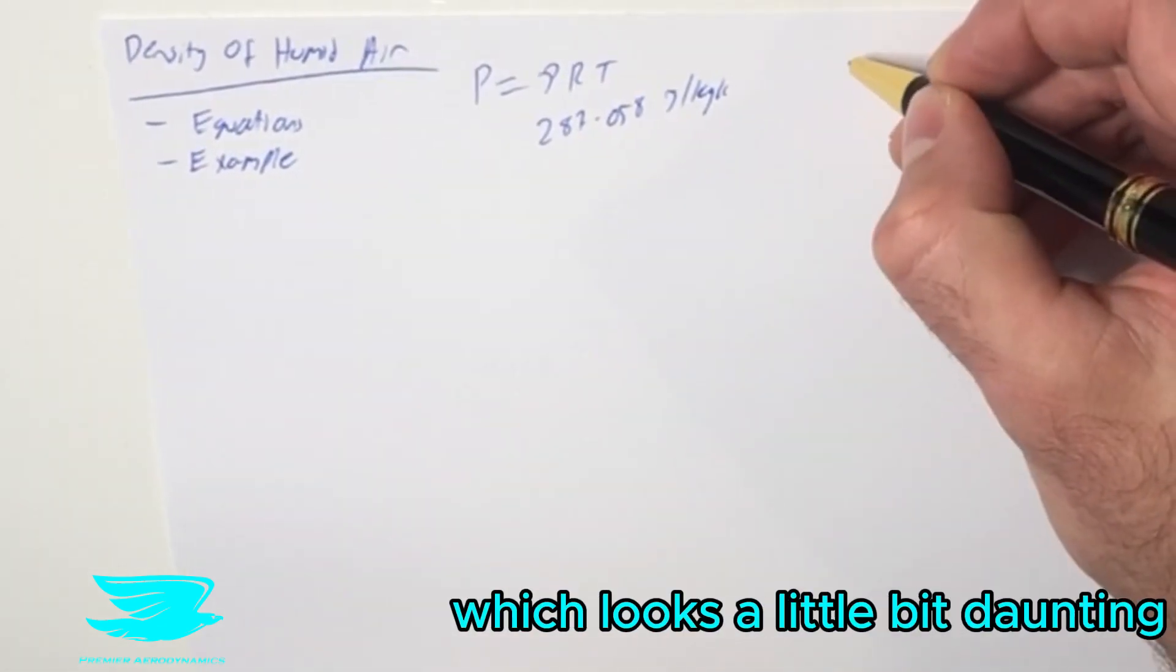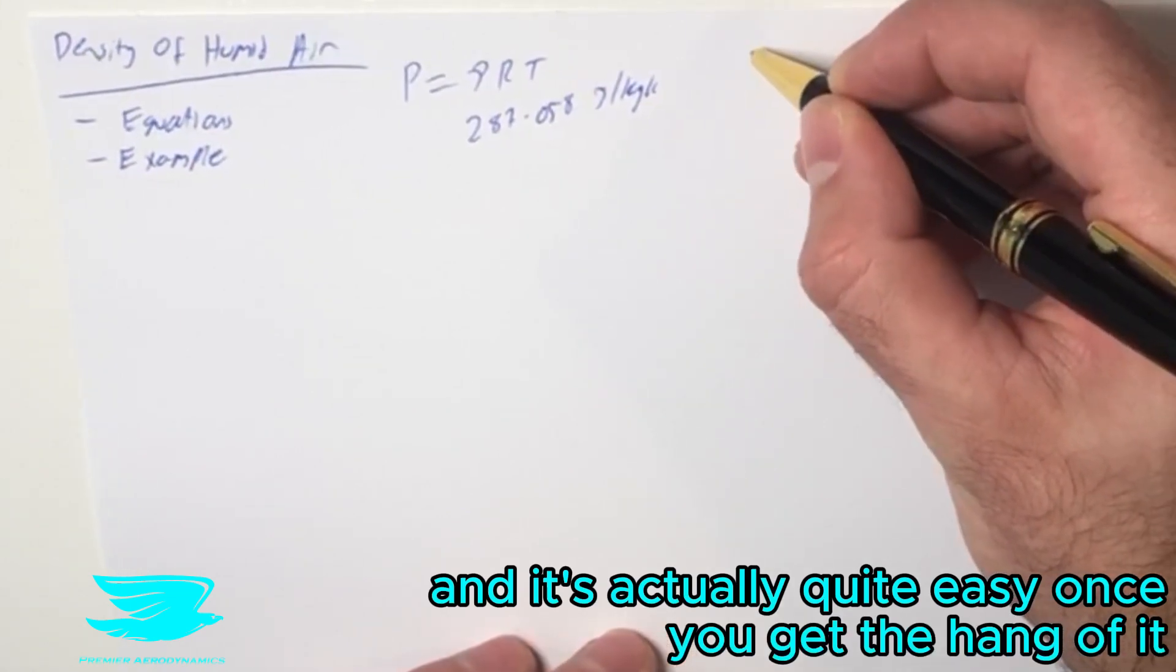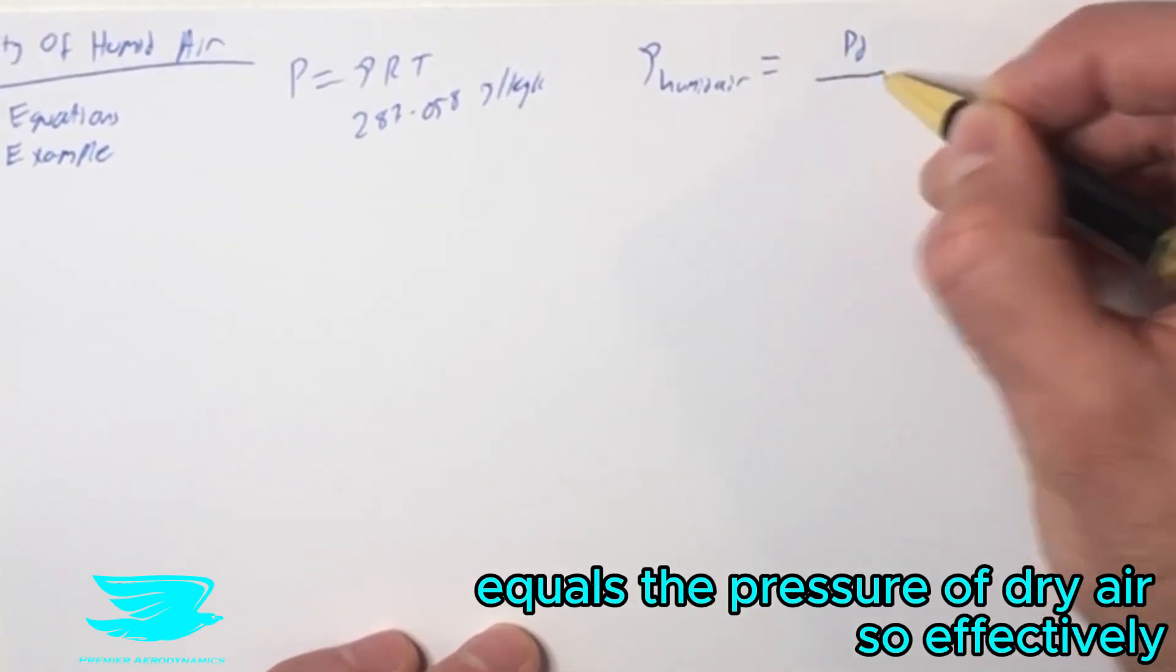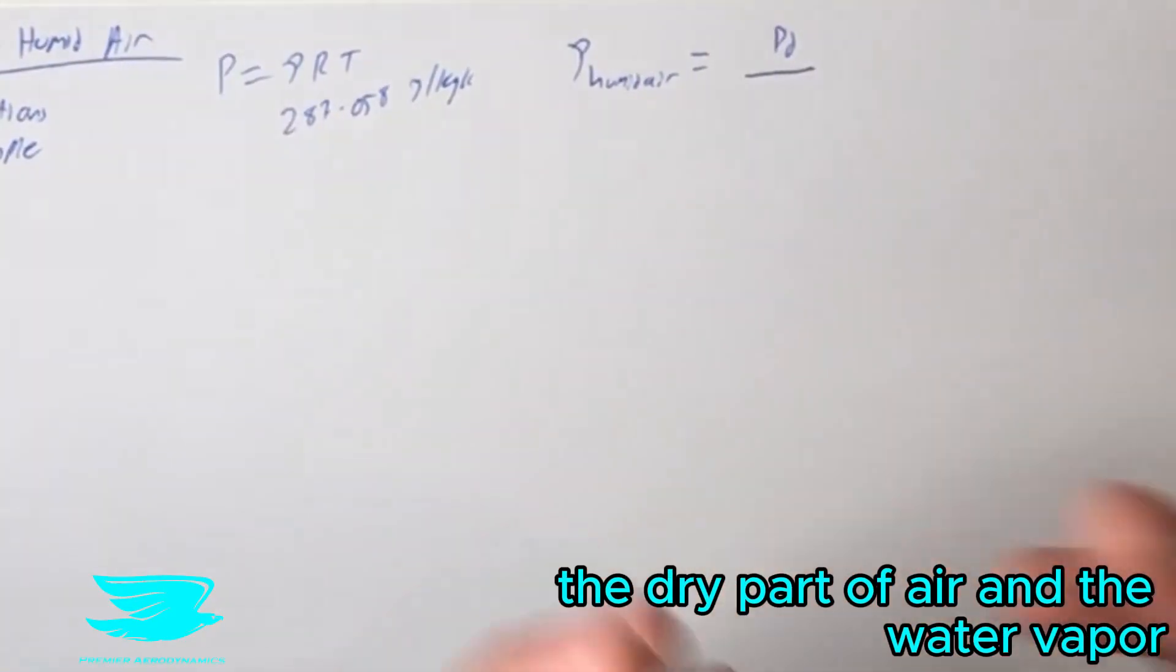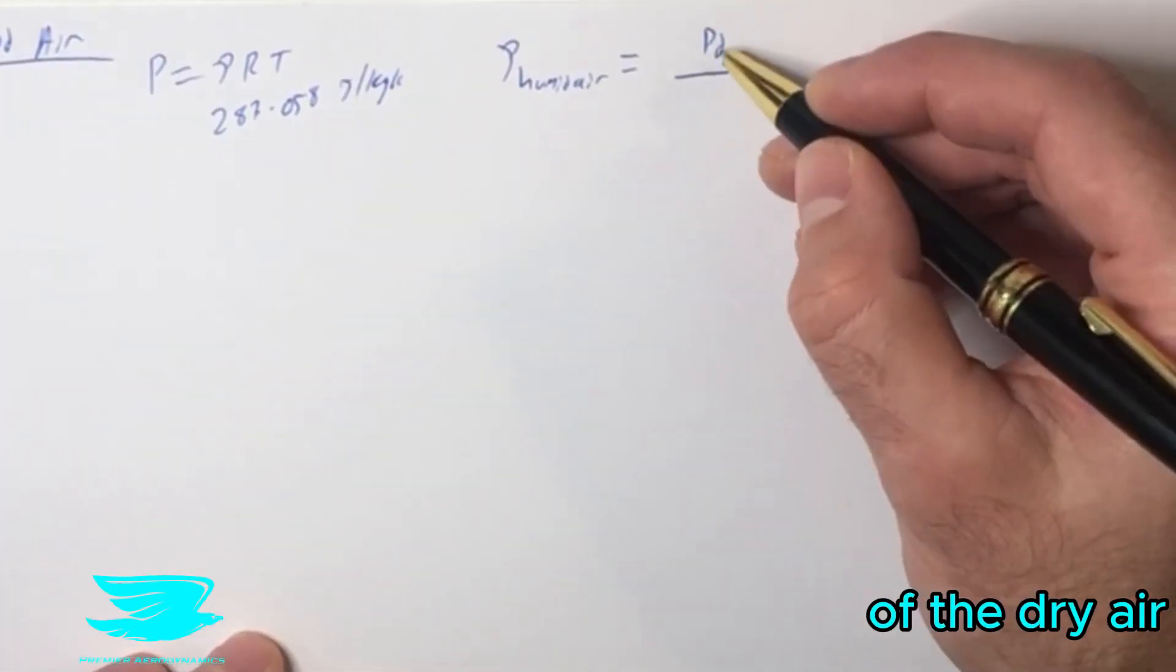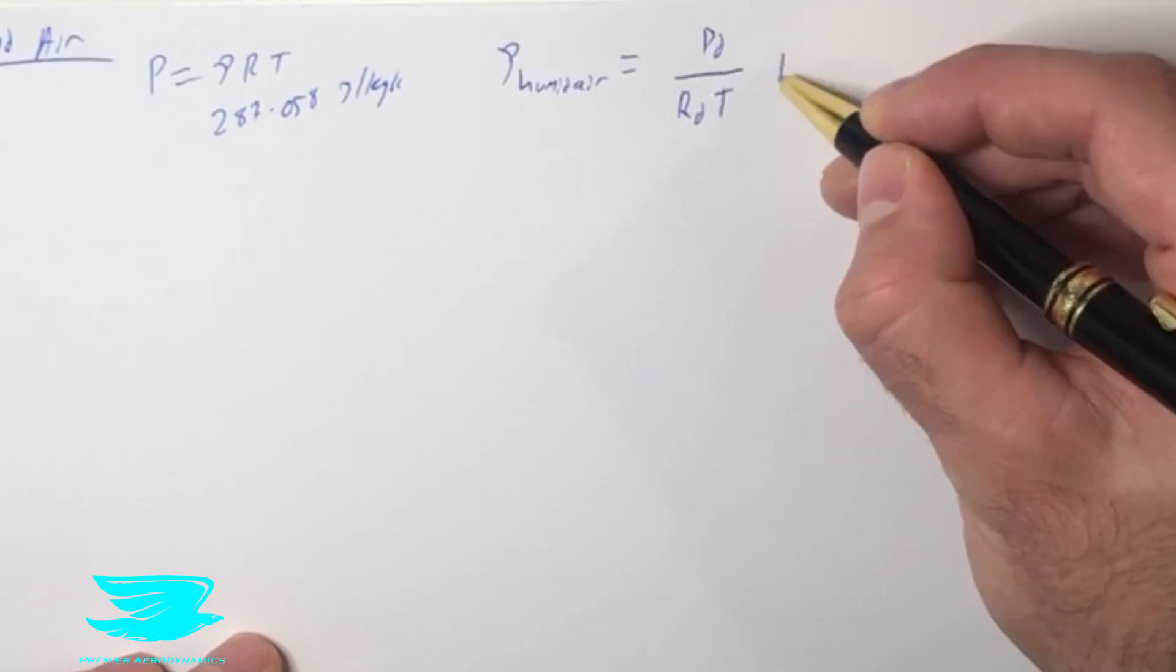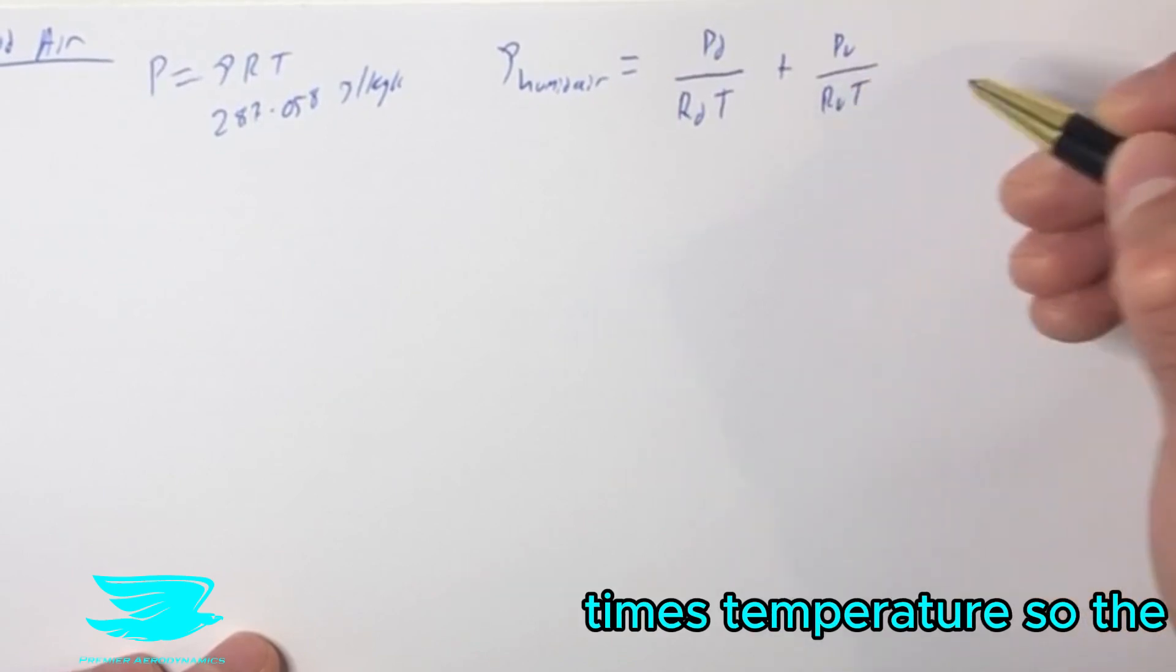We use one equation here, which looks a little bit daunting, but we'll go through it step by step. The density of air equals the pressure of dry air, so we're effectively segregating the pressures that the dry part of the air and the water vapor are creating. The pressure of density of the dry air divided by the gas constant of the dry air times the temperature, plus the pressure of the water vapor divided by the gas constant of the water vapor times temperature.